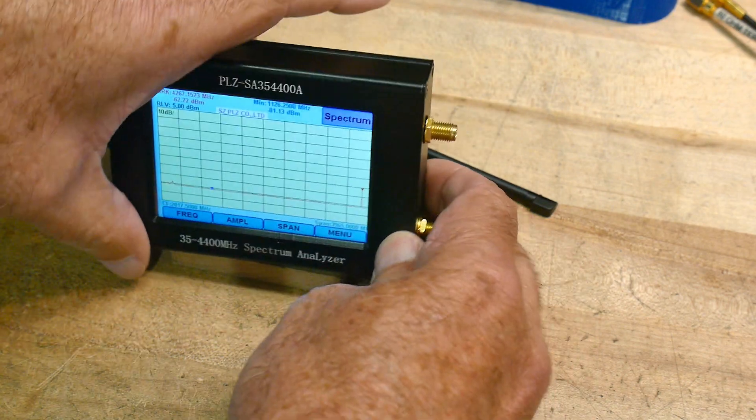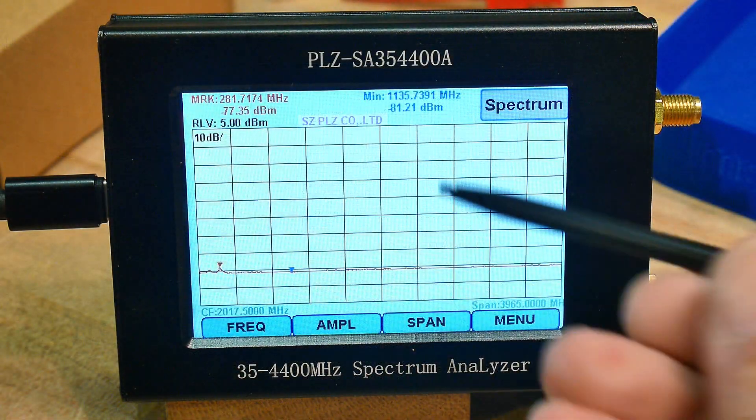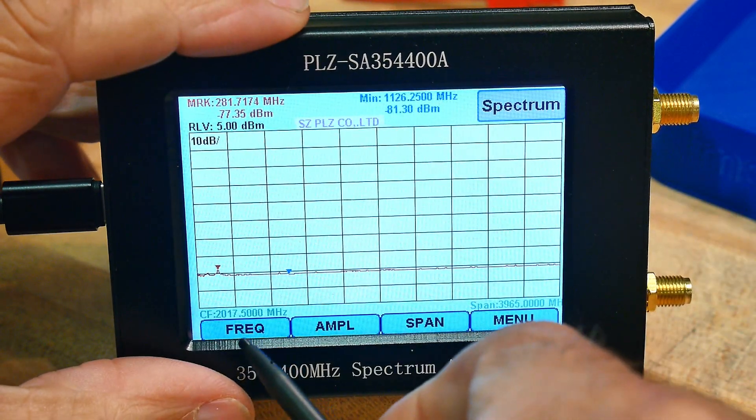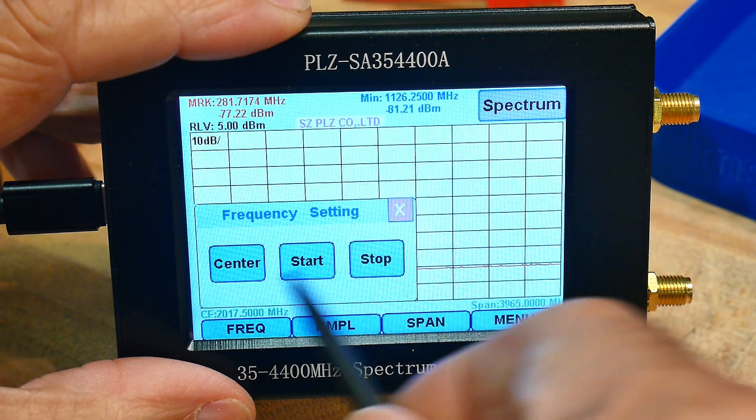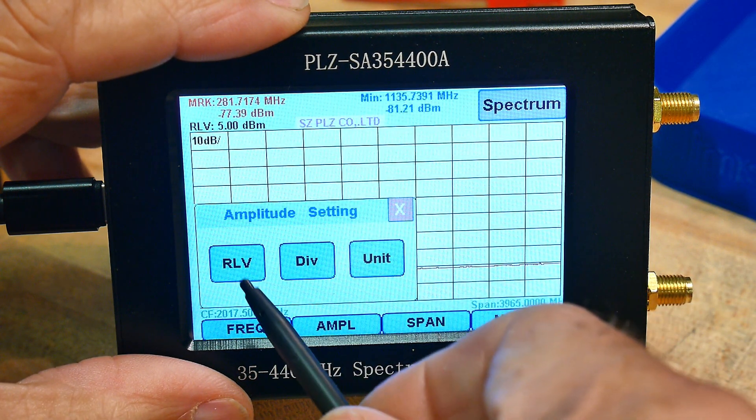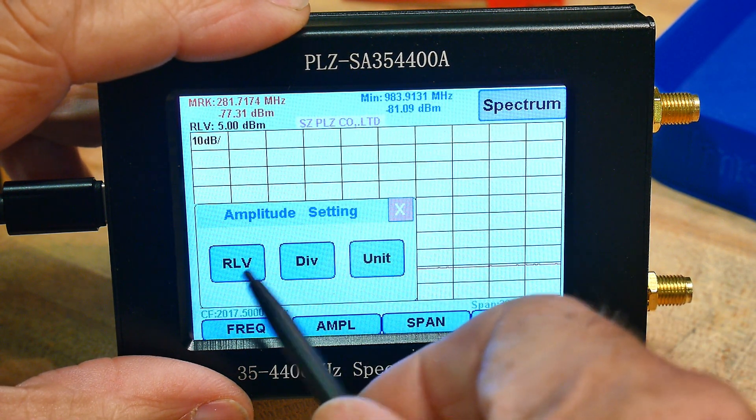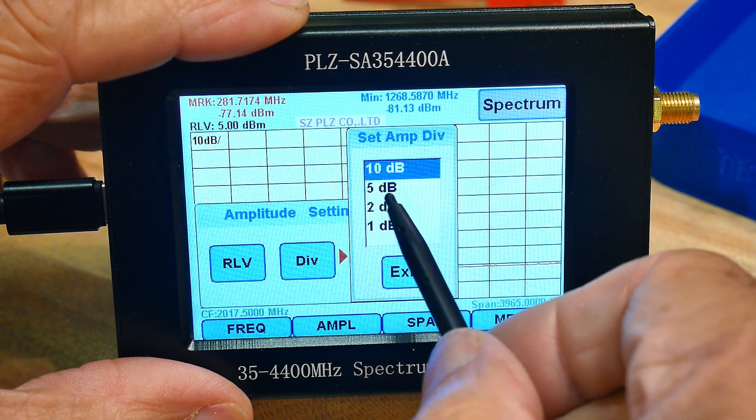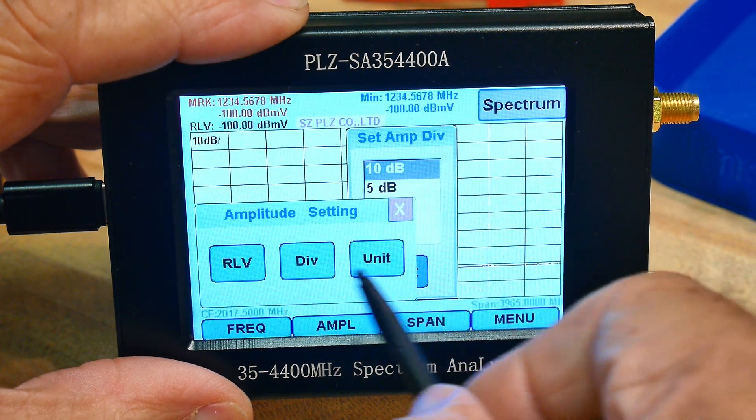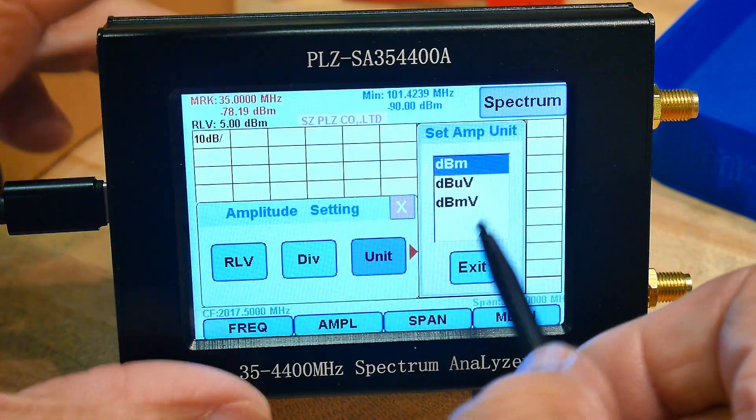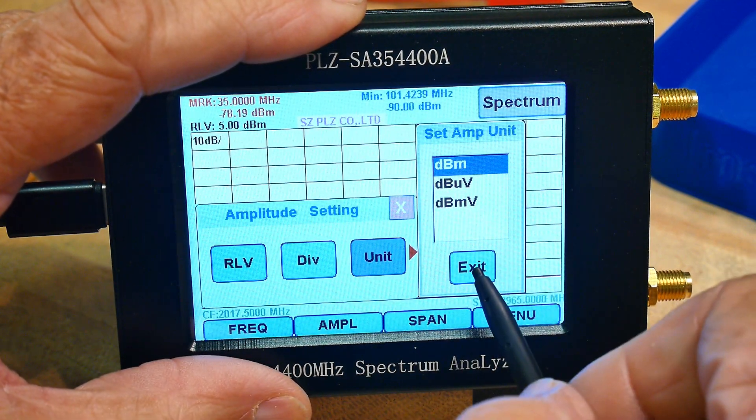Let's take a look at the menu system here. It comes up and frequency you set the start stop or center. Amplitude you can set the divisions or if it's relative or the units that you want, you know, 10 dB, 5 dB, we'll do 10 dB. Units can be dBm, dBV, microvolt, dB millivolt.